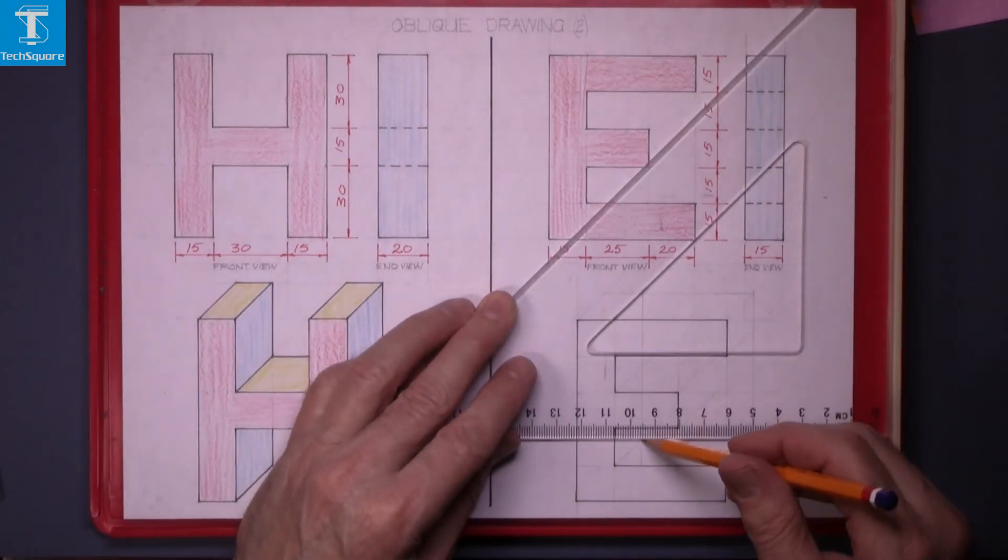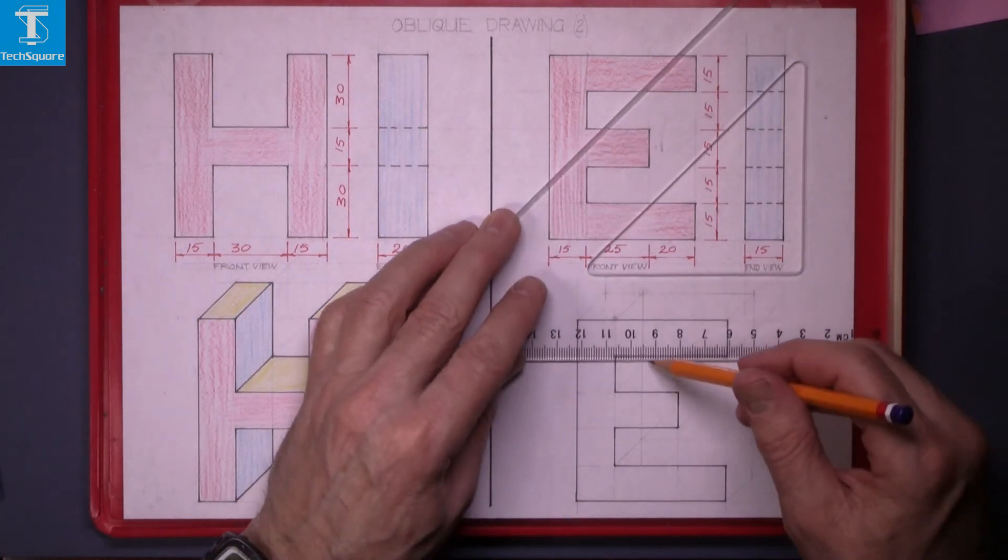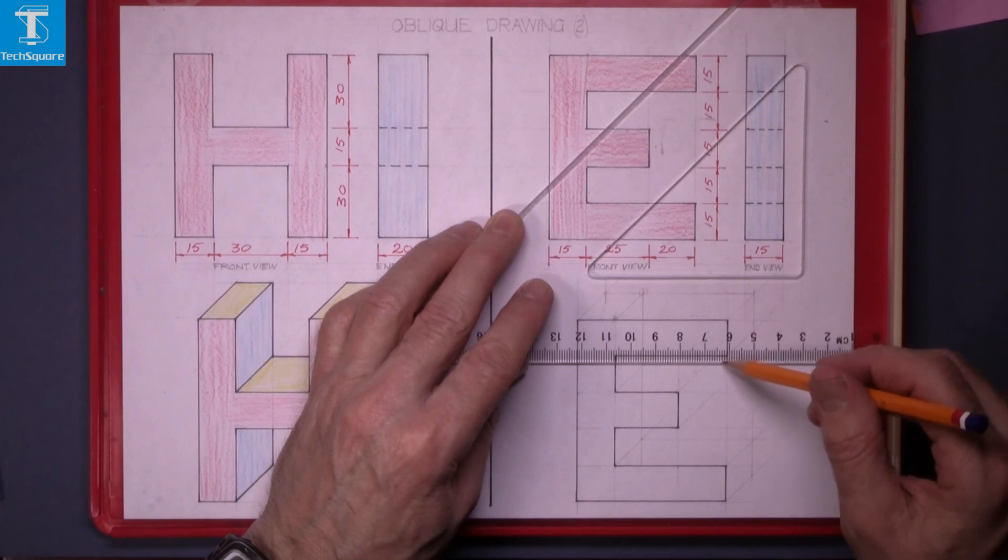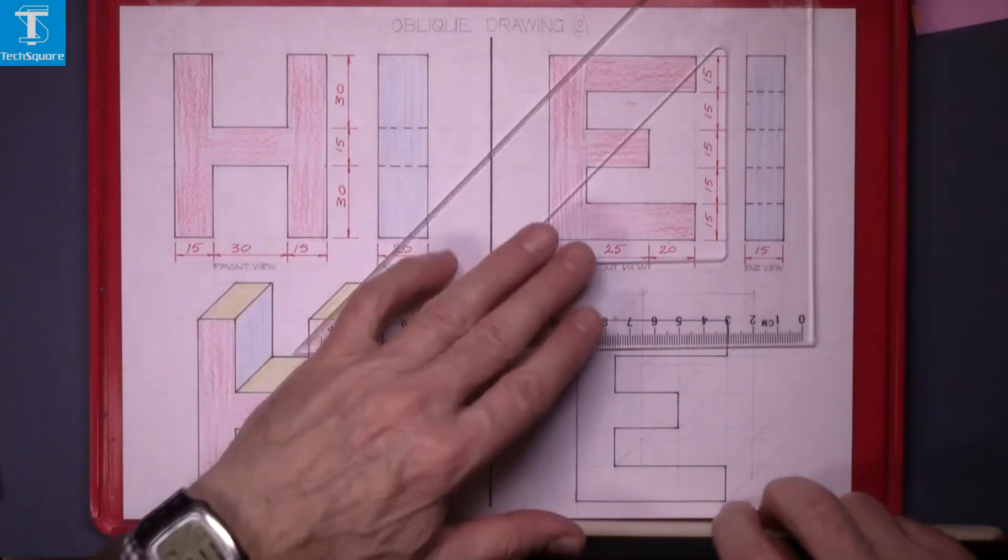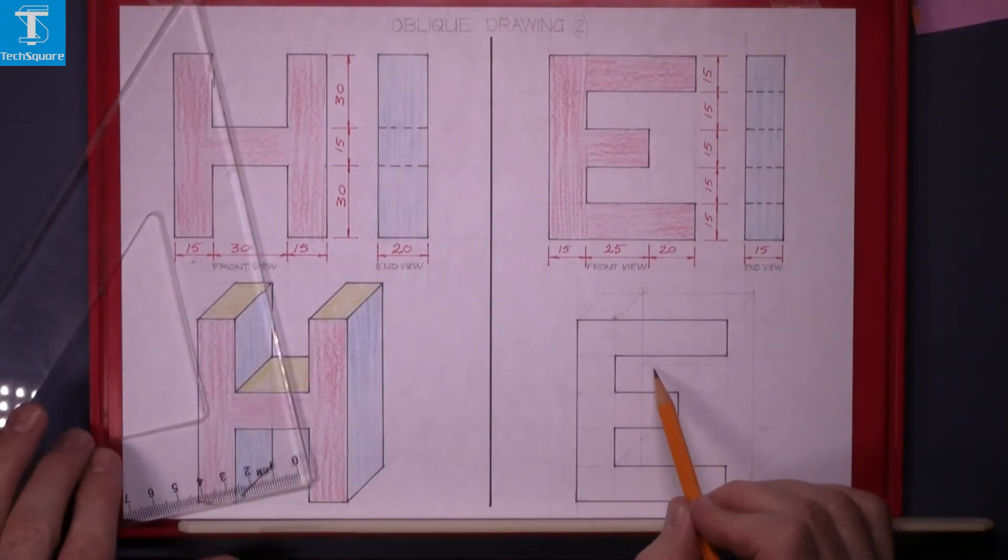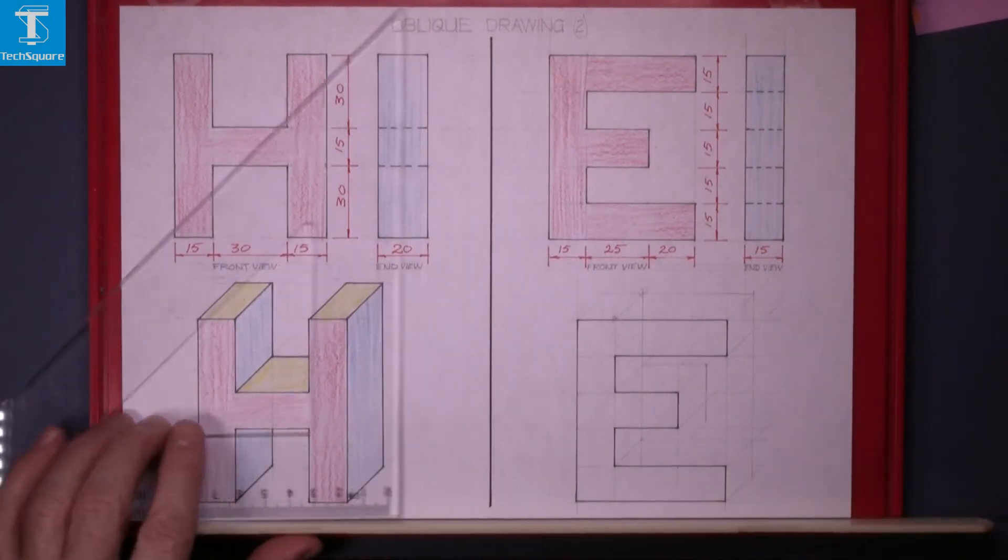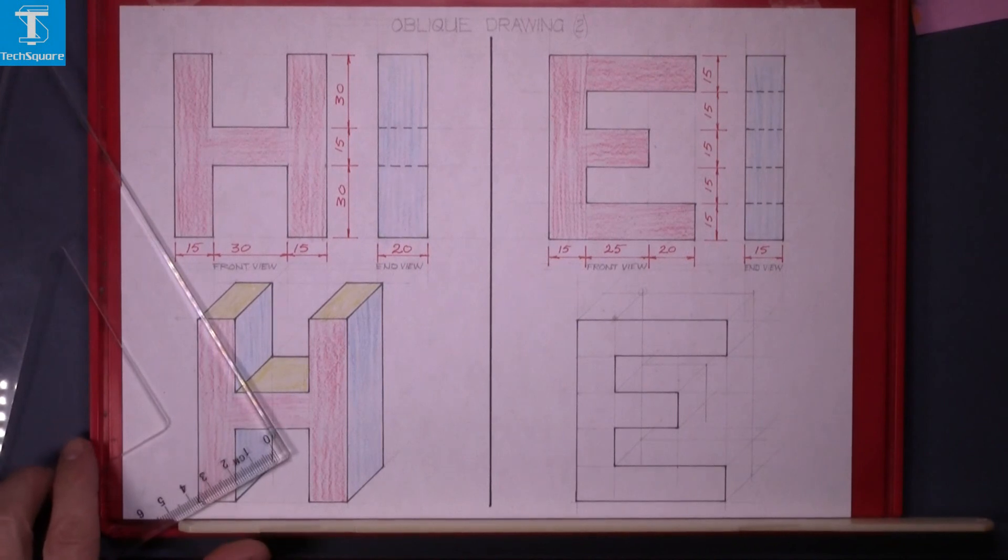Now draw your line out from that point and the same here. And that gets us the point to draw down here. And that's the letter E complete.